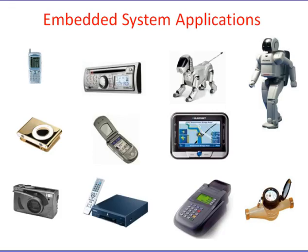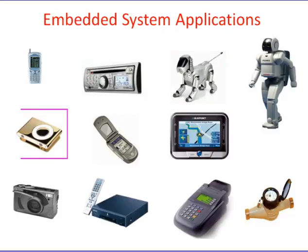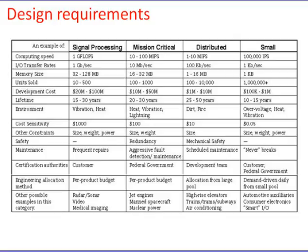These are some of the embedded system applications found in our daily life, such as cell phones, digital cameras, car music systems, robotics like AIBO and ASIMO, iPod, navigation systems, set-top boxes, point of sale terminals, and water flow meters. Except for a few common features, the rest of the embedded hardware is usually unique and varies from application to application. Each system must meet a completely different set of requirements.